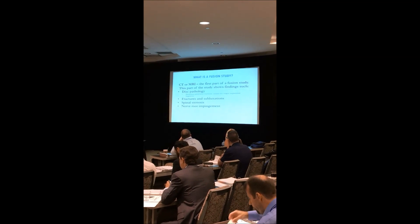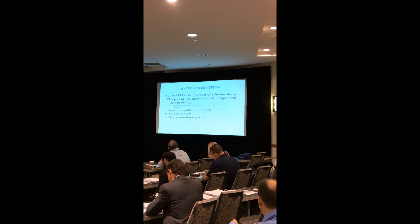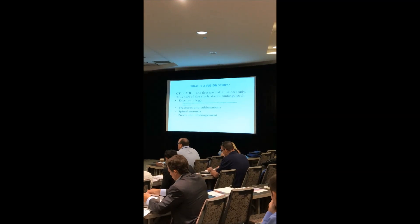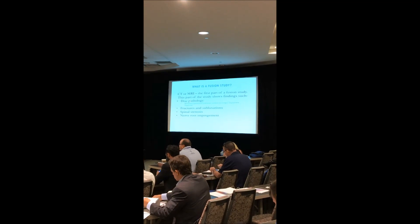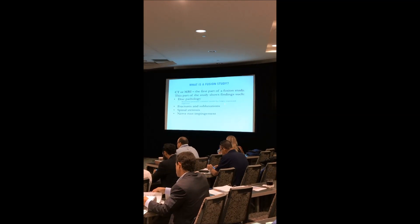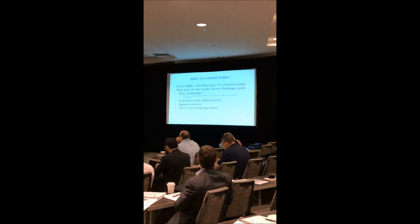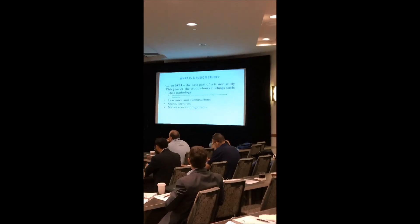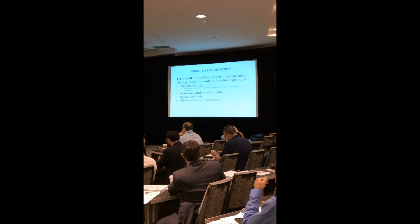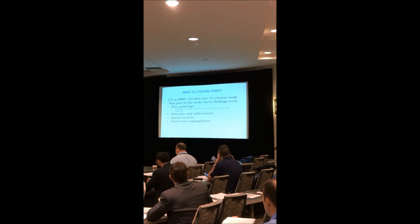We'll also cover some of the questions we're answering for the neurosurgeons and orthopedists that we get spine referrals from. So a fusion study is made up of two parts. The first part is a CT or MRI — the typical CT or MRI that we do — showing anatomic detail such as disc pathology. This is the part where we're classifying different disc herniations, protrusions, extrusions, or annular disc bulges. We also see fractures or subluxation on CT or MRI, and this is where we comment on spinal stenosis, nerve root contact or impingement, whether it's a disc or a bone spur contacting the nerve root.